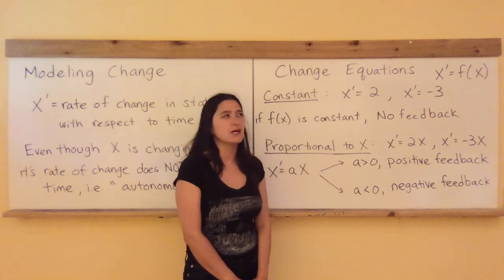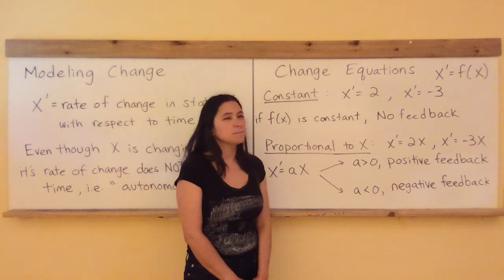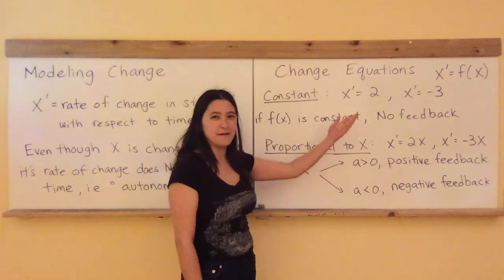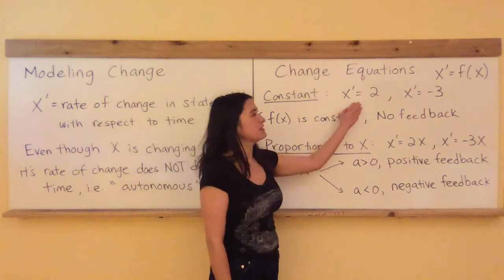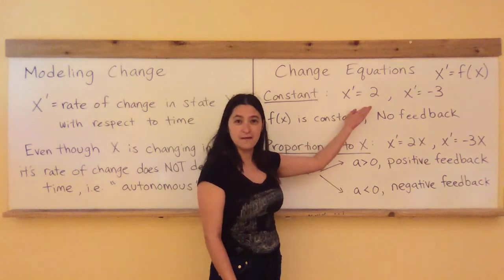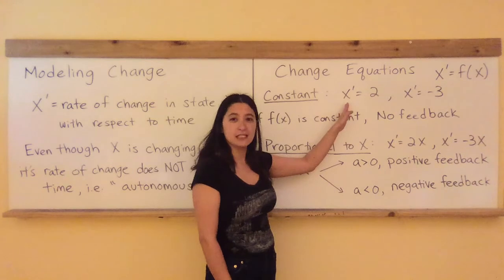And it turns out that the statement that X prime equals 2 leads to a model that behaves linearly. The value of the state X will always be going up by 2, so it'll go 2, 4, 6, 8, or it'll always be adding 2 depending on where you started from.